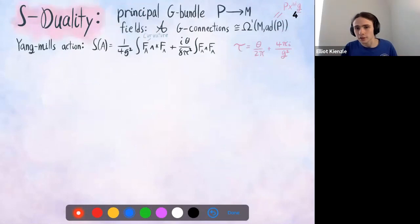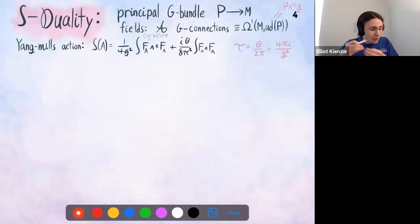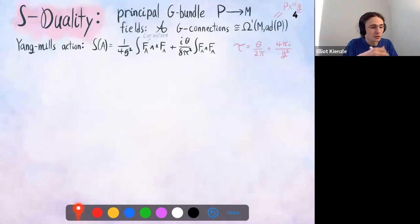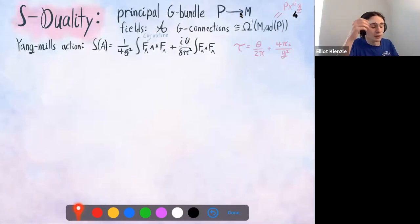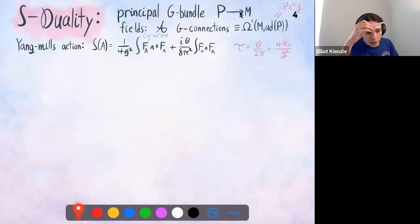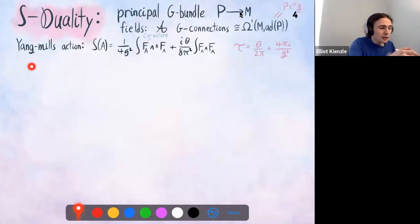Now let's talk about S-duality, which is what Sid talked about last week. We're on a principal G-bundle P on a four-manifold M, and the fields we're considering are G-connections. The connections form an affine space based on the vector space of adjoint-valued one-forms — sections of the cotangent bundle tensored with the adjoint bundle, where the adjoint bundle is the bundle associated to the adjoint representation. Its fibers are the Lie algebra, transforming under the adjoint when acted on by gauge transformations.